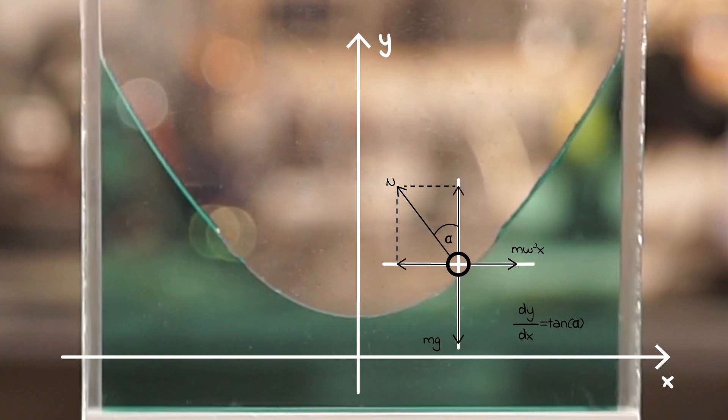After splitting the normal force to its components, we demand that the forces will cancel each other out, both in the x and the y directions. This gives us two equations. Dividing them gives us an expression for tangent alpha, which we can just substitute with the derivative of the curve. This is not a standard equation. We don't have a relation between y and x.